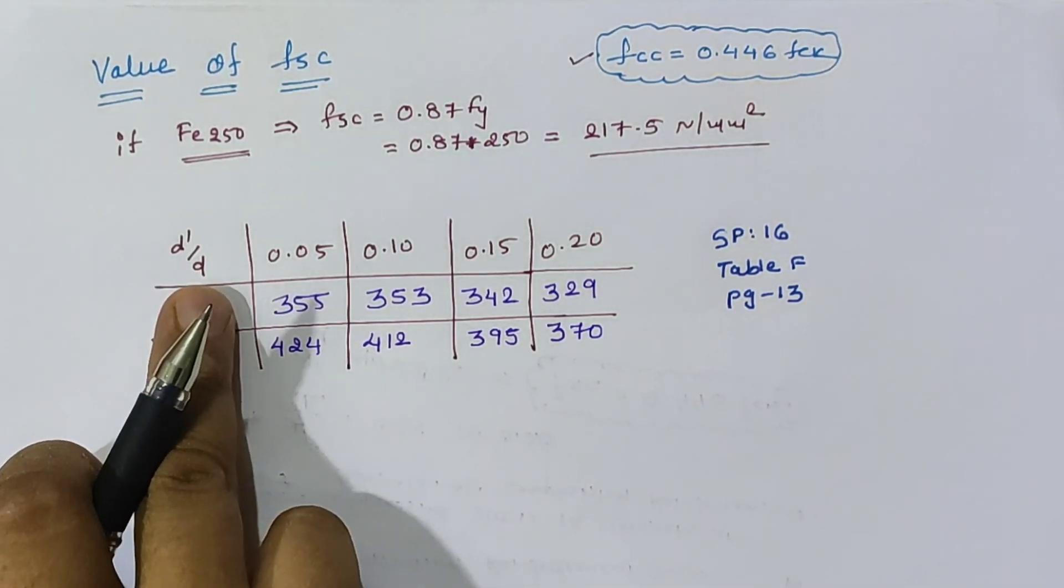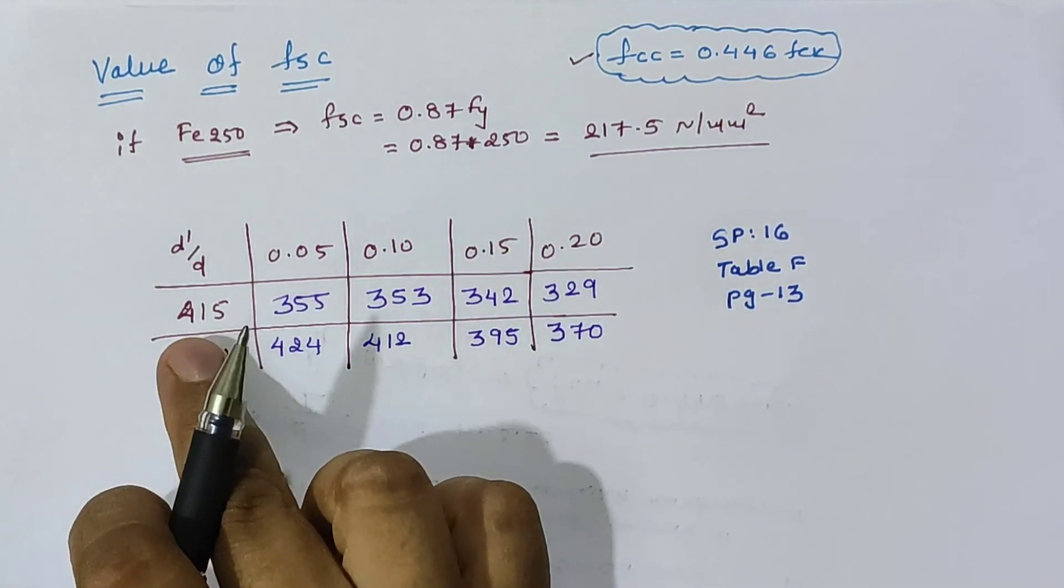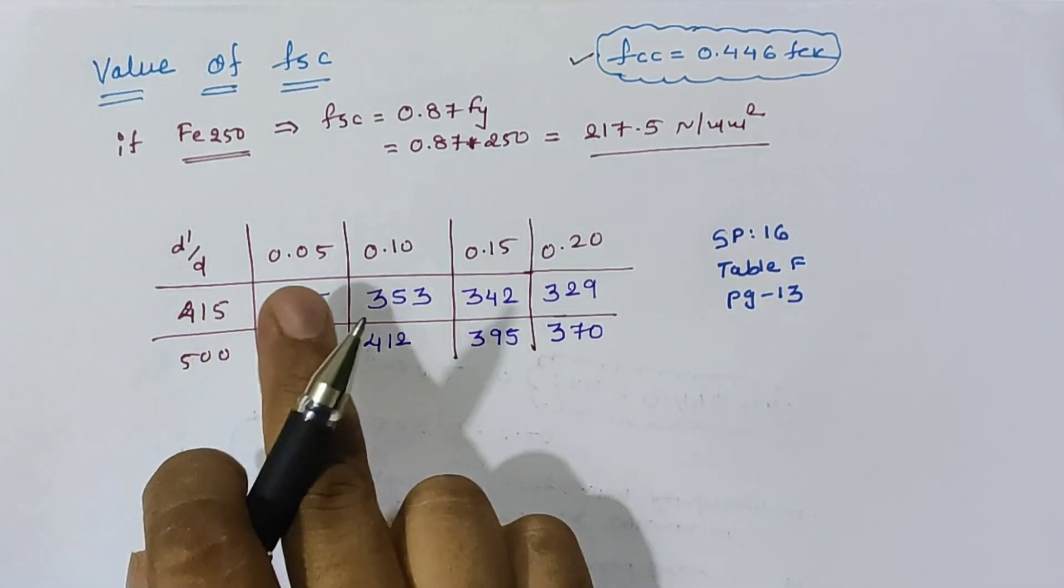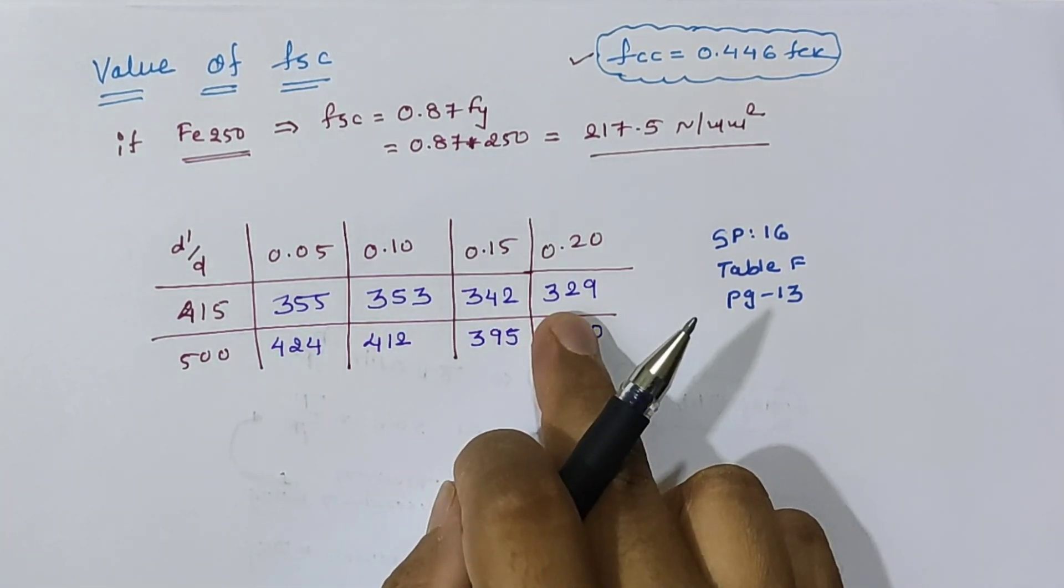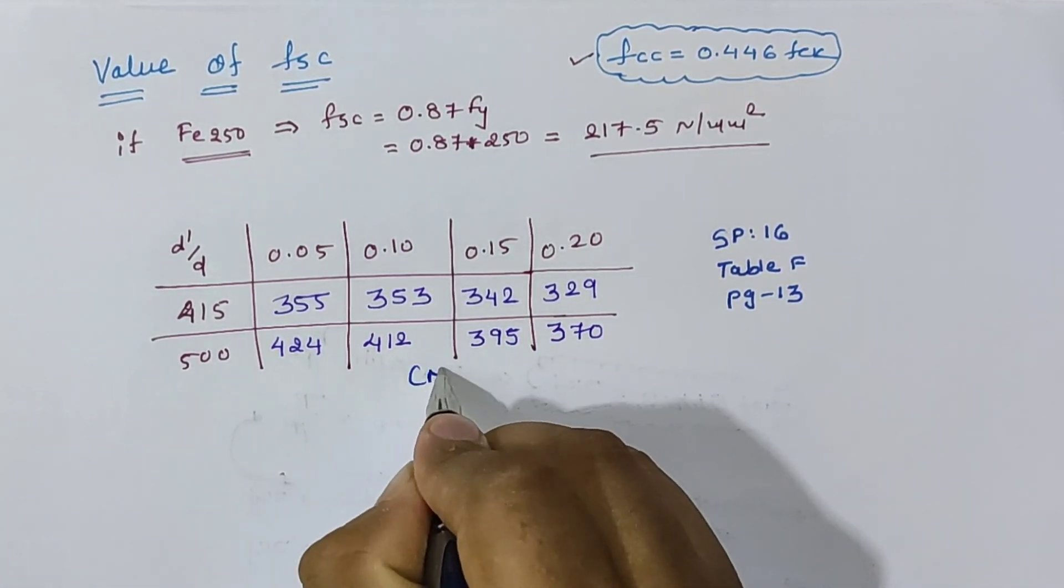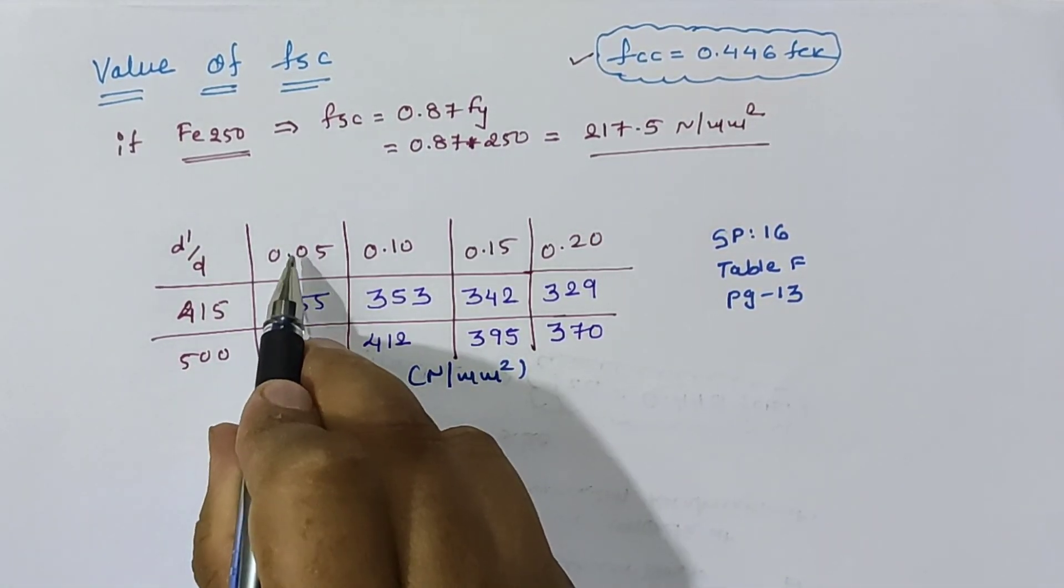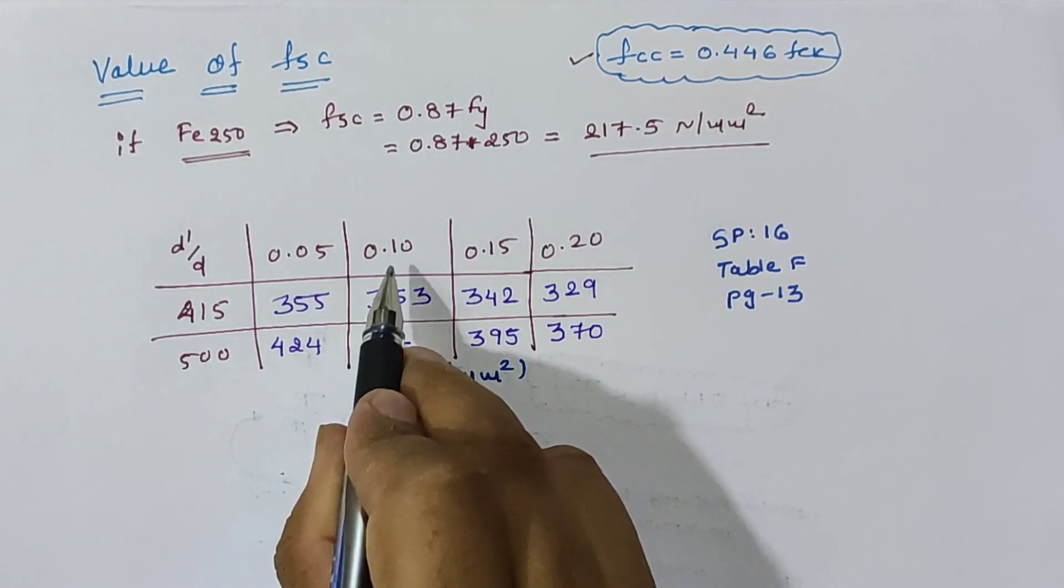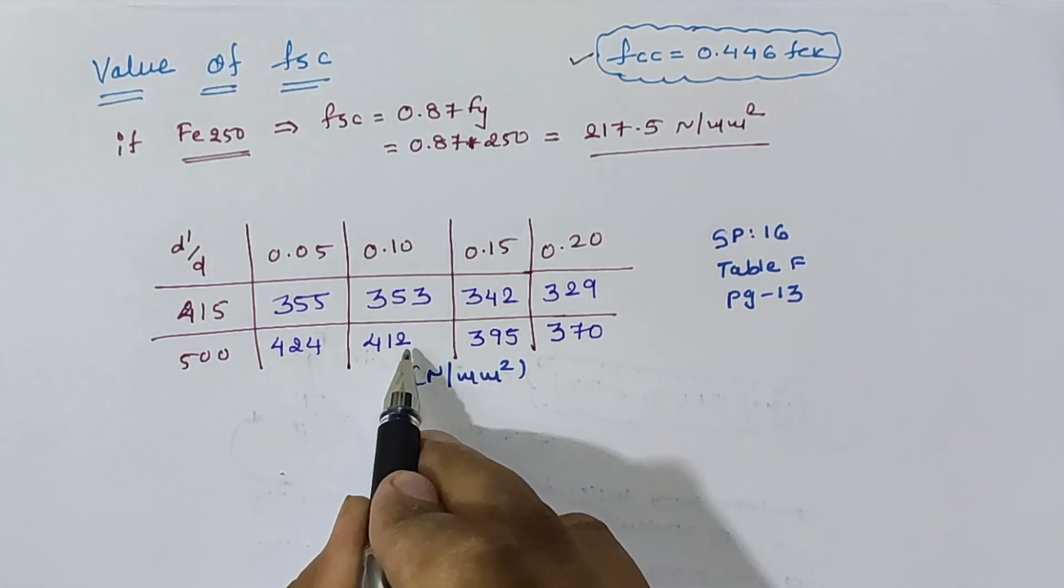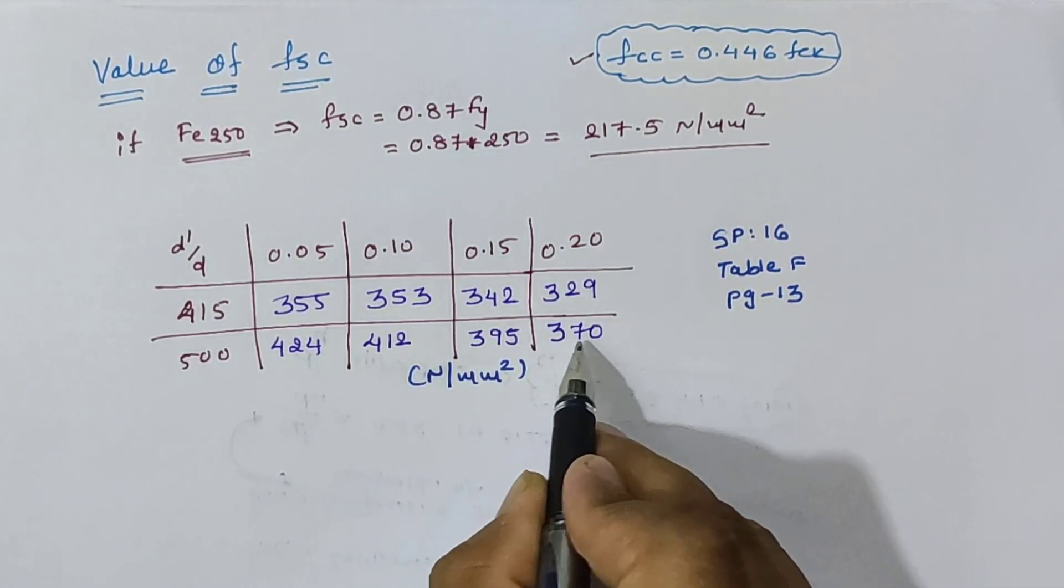These values are given in SP16 table F, page number 13. For different values of d' by d ranging from 0.05 to 0.2, we have values for Fe415 as 355, 353, 342, and 329 N/mm². If we have Fe500, then for d' by d as 0.05 it is 424, 0.1 as 412, 0.15 as 395, and 0.2 as 370.